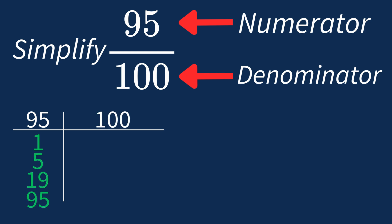For 100, the factors are 1, 2, 4, 5, 10, 20, 25, 50, and 100. So the largest common factor between 95 and 100 is 5.